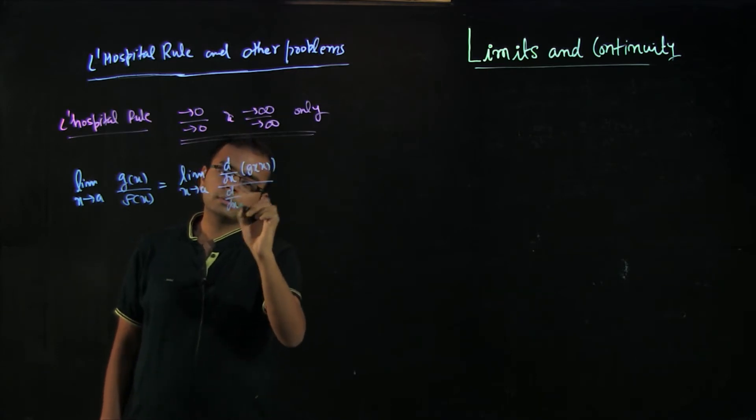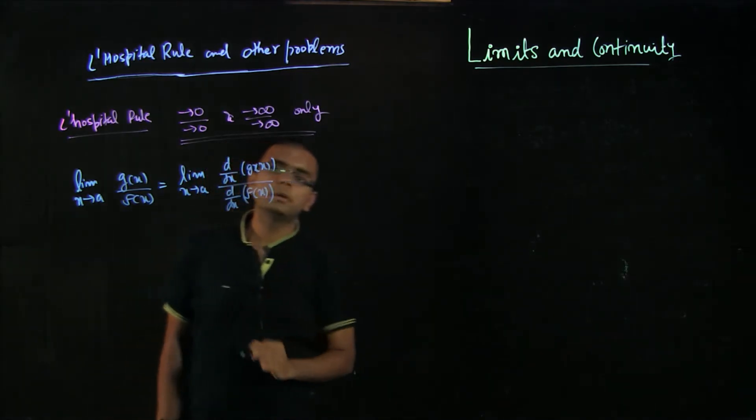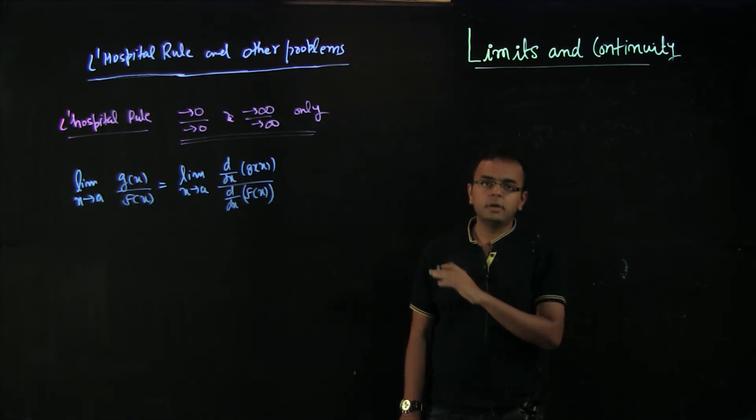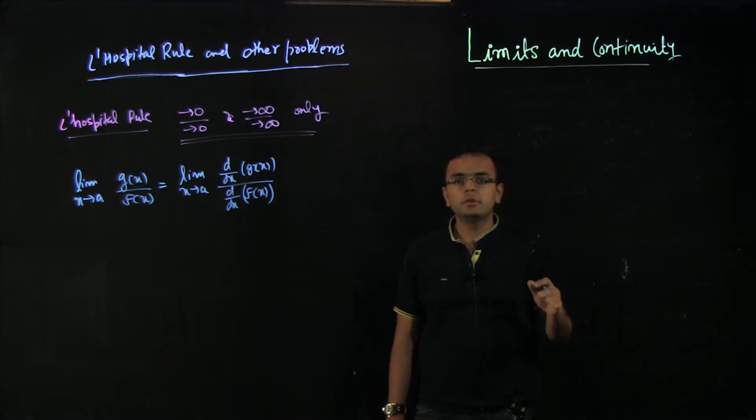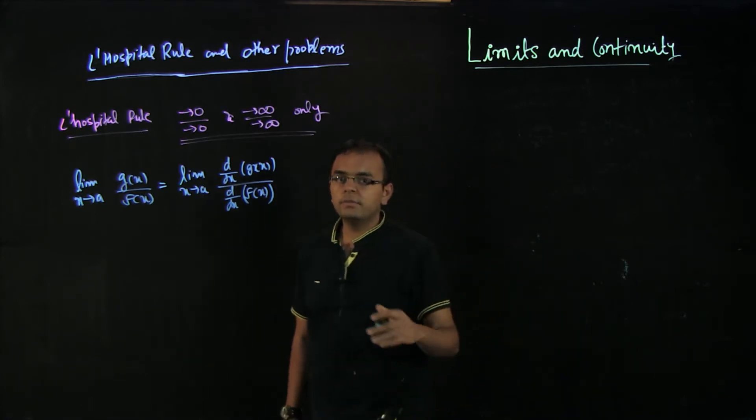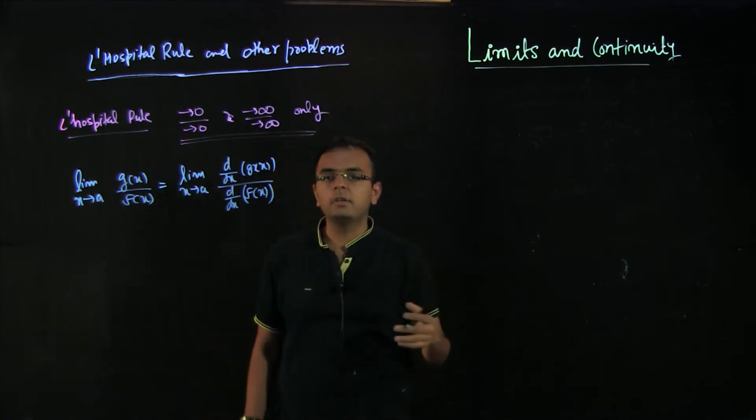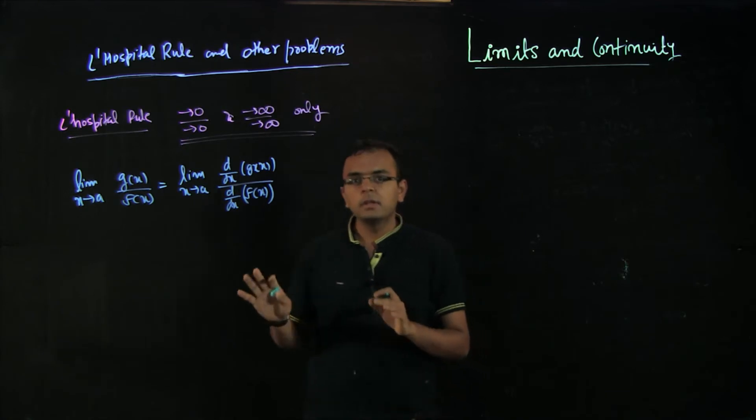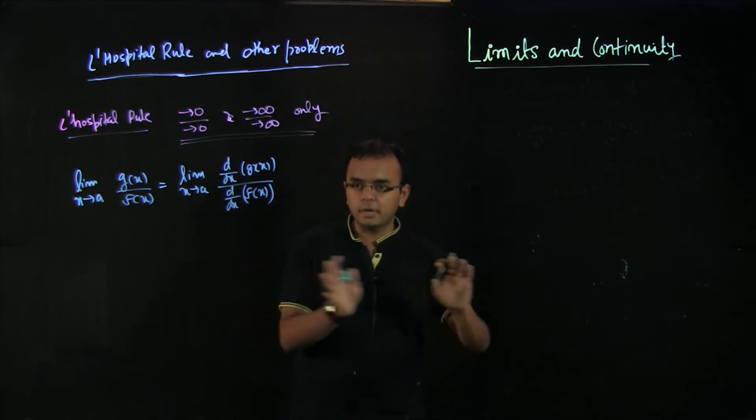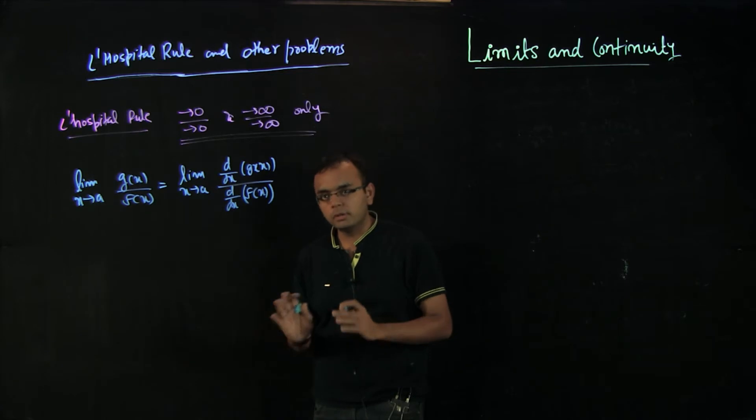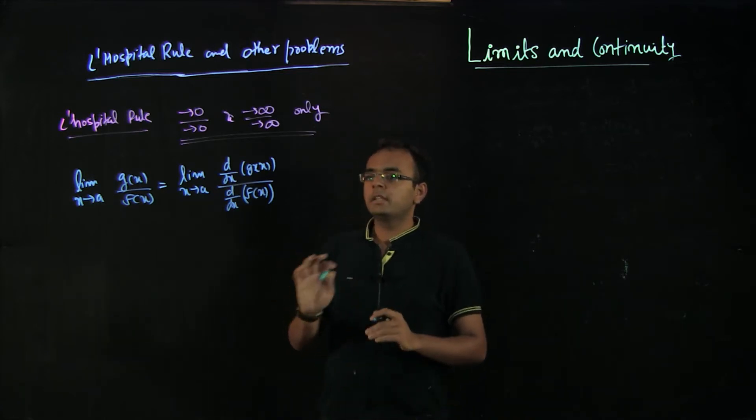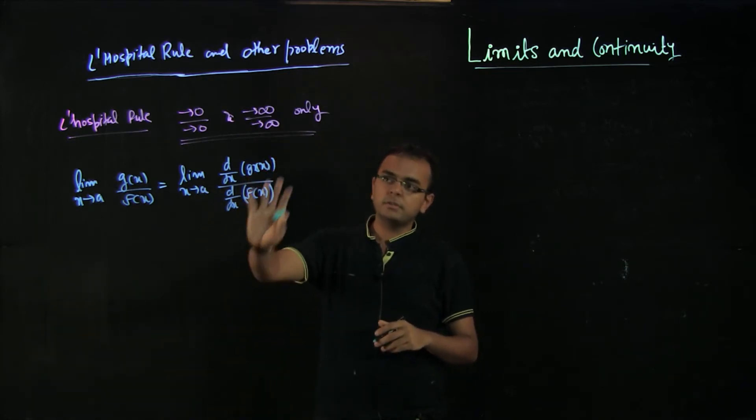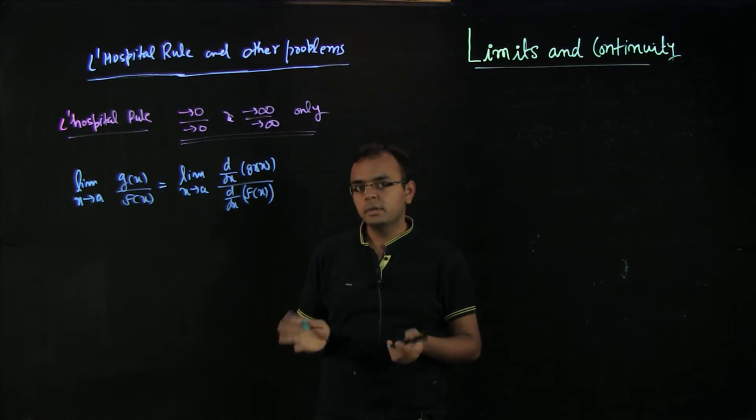What is d by dx is a derivative. If you are not familiar with derivatives, there is an entire chapter already there which you can look at. I understand that we probably still haven't read about derivatives, but there is another chapter completely dedicated to that, so please do have a look. But basically the idea is that you can take derivatives and get the answer if there is 0 by 0 problem. That is L'Hopital rule.